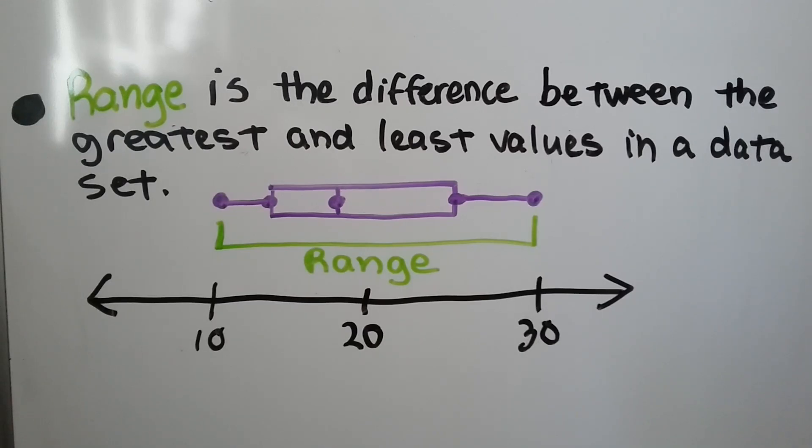The range is the difference between the greatest and least values in a data set. So the least value is 10, the greatest value is 30, that's the end of the whiskers, and that's the range for our box plot.